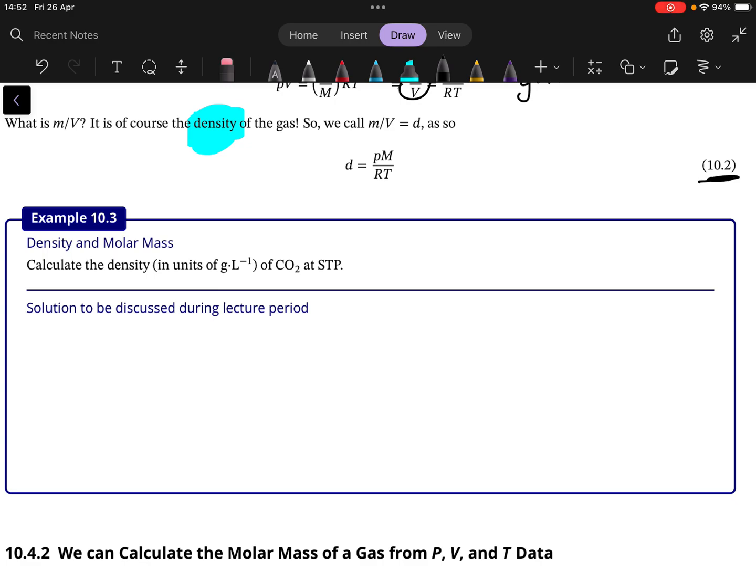Then we can use this 10.2 to calculate its density. So basic example: calculate the density in units of gram per liter of CO2. So how do we do that? Well we start, we want to do this: pressure, molar mass, R and T. So pressure at STP that's one atmosphere, so it's going to be equal to 101,325 pascal.